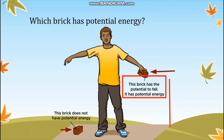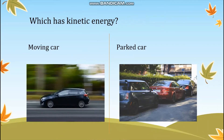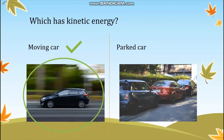Next, you have to guess which one of these two cars has kinetic energy — does the moving car or the parked car have kinetic energy? The correct answer is the moving car. Energy that is present in a body by the virtue of its motion is called kinetic energy. That is why objects need to be in motion to possess kinetic energy. Therefore, the moving car has kinetic energy whereas the parked car does not.